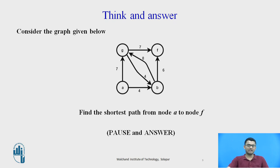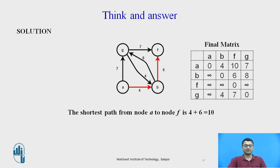At this point I want you to pause the video, consider the graph given, and find the shortest path from node A to node F. If you have carefully followed the procedure discussed, the final matrix will show the value from A to F as 10, where A-to-B is 4 and B-to-F is 6. Adding 4 plus 6 gives 10, which is the shortest path from node A to node F.